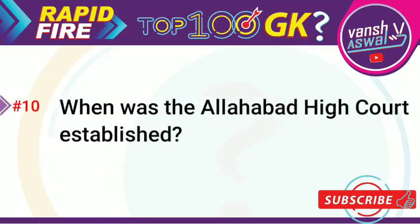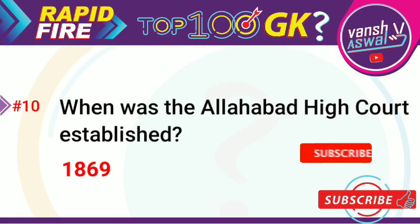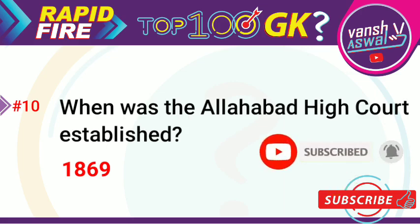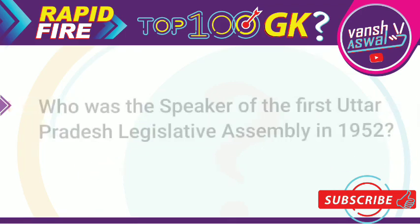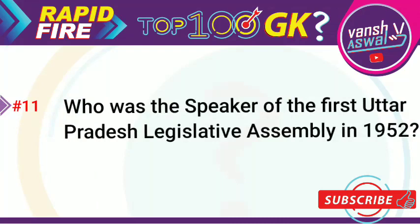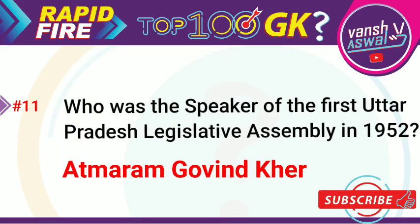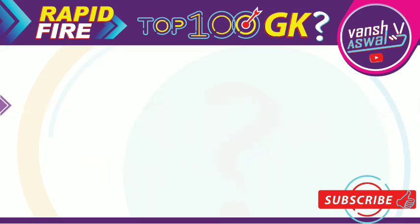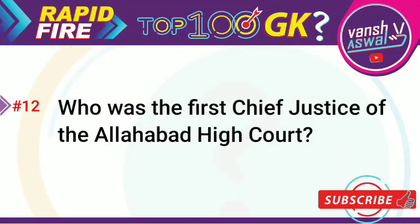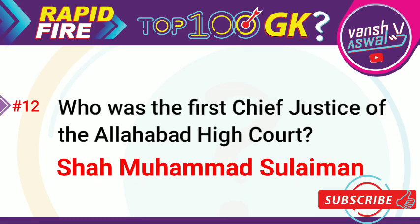Question 10: When was the Allahabad High Court established? Answer is 1869. Question 11: Who was the speaker of the first Uttar Pradesh Legislative Assembly in 1952? The right answer is Atmaram Govind Kher. Question 12: Who was the first Chief Justice of the Allahabad High Court? Answer is Shah Muhammad Sulaiman.